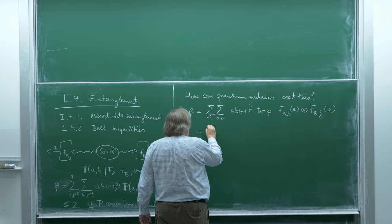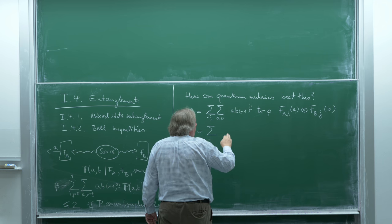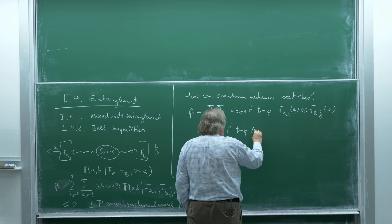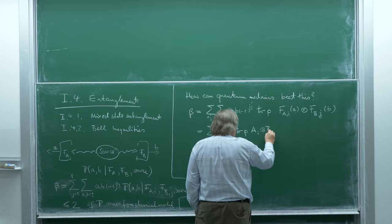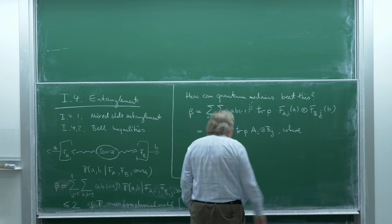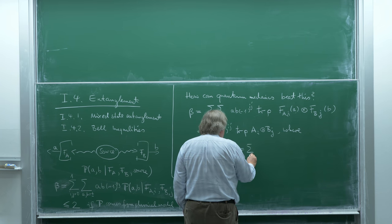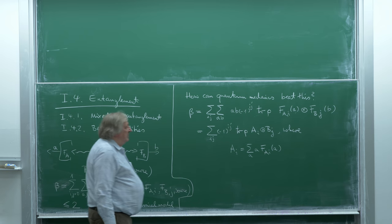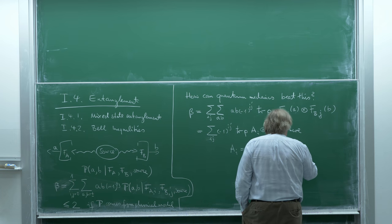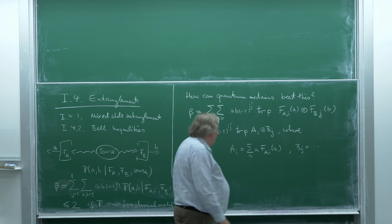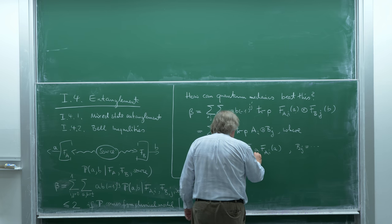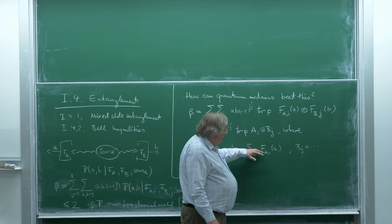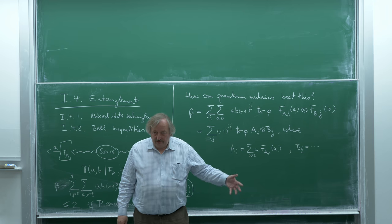We can simplify by doing the sum over A and B. A_i is simply what I get by summing over A. B_j is the corresponding thing. There are two operators — A runs over the two possibilities plus and minus. There are two positive operators less than 1, and here we have the difference of the two, essentially: F_{a+} minus F_{a-}. That's what is written there.